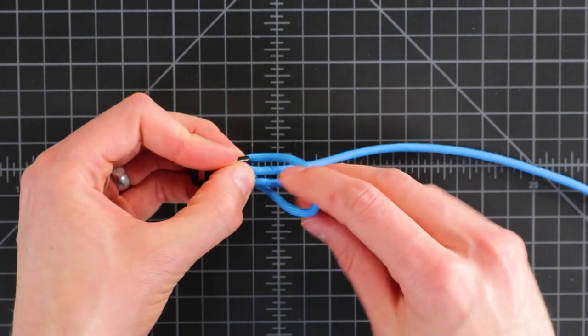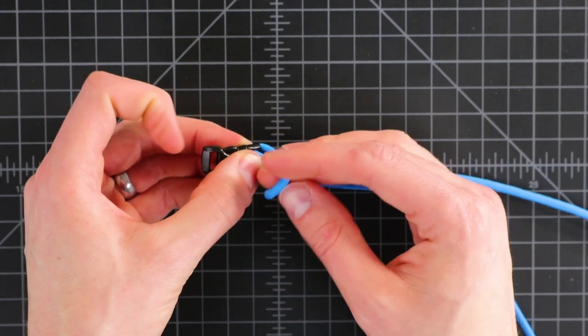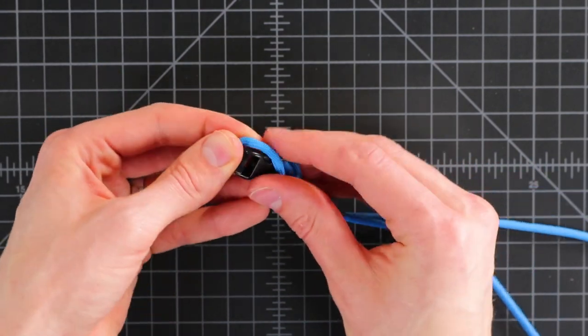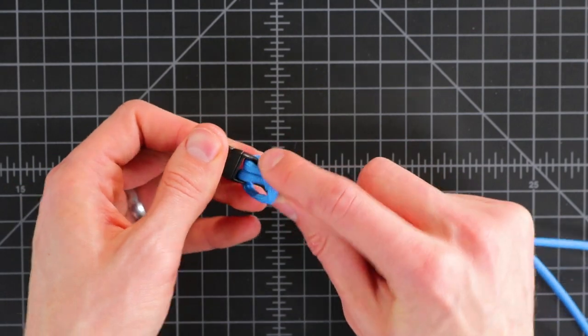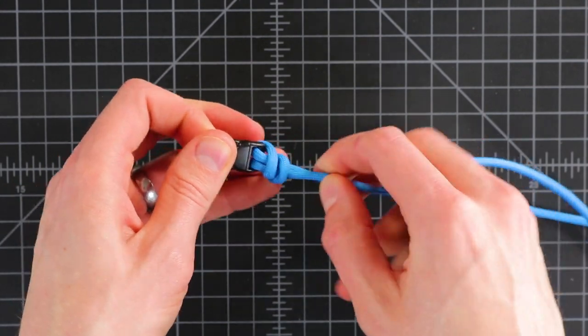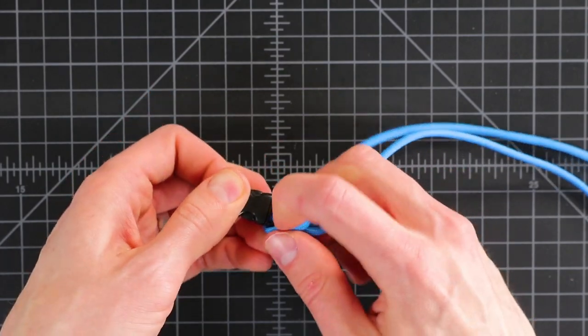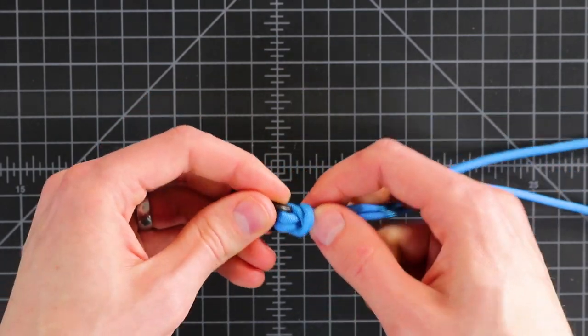And then with that second twist, you can also do the same thing. Twist it once. Bring it around your buckle again. In some situations, that's going to be a lot easier than trying to find the end of your cord. And tighten it down again.